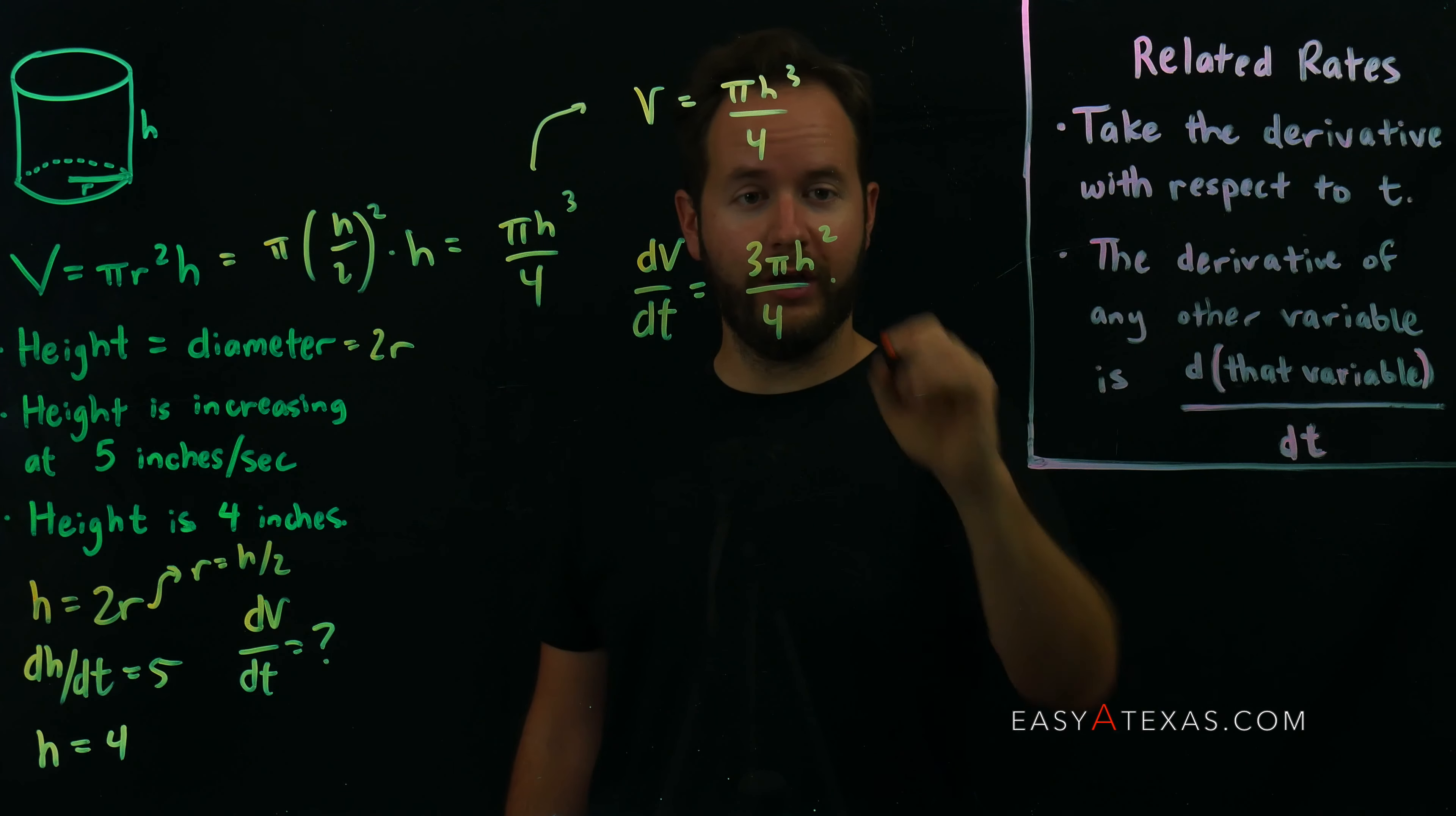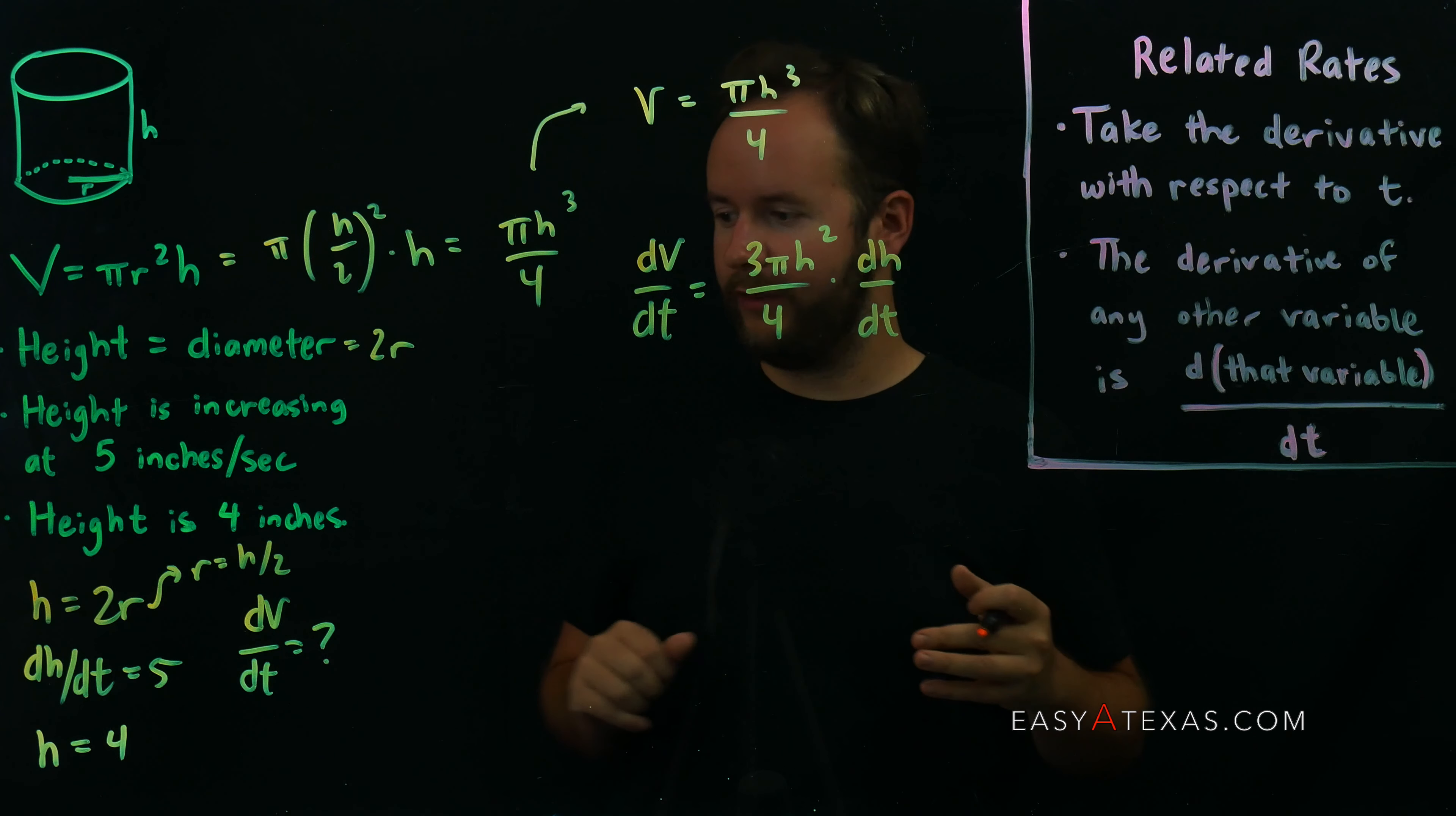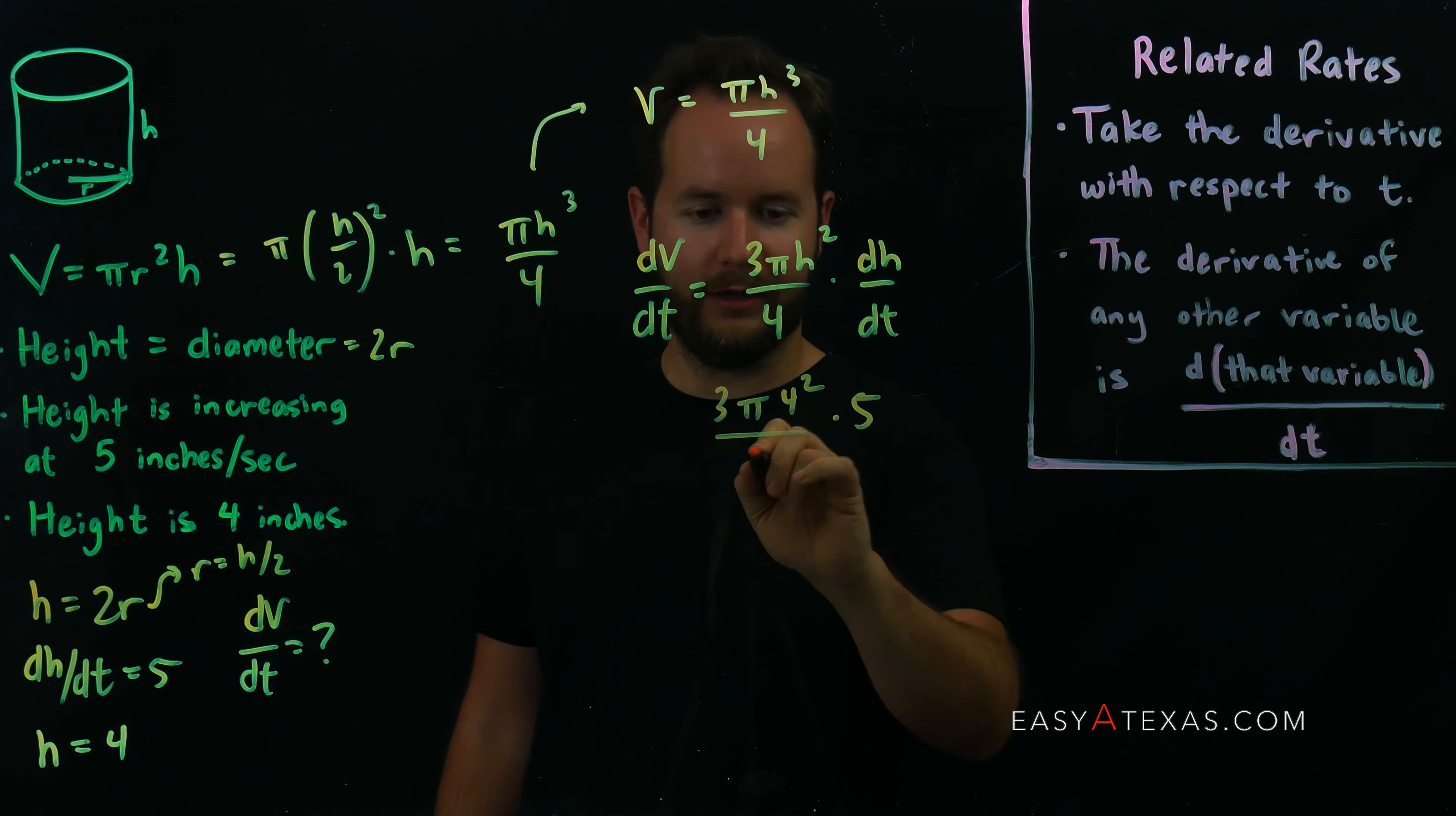Okay, now that I've got this equation that helps me relate h and dh/dt and dv/dt all here together, we're going to take what we know: that dh/dt is 5 and that h is 4, and just plug that into the formula to find the value of dv/dt.